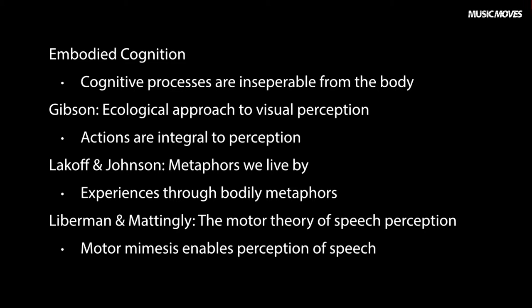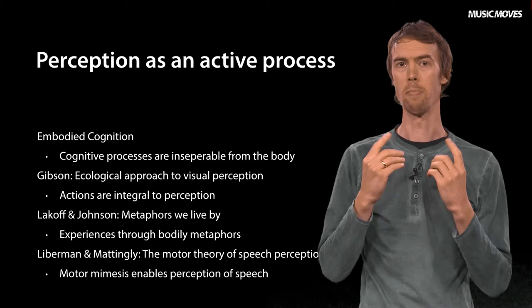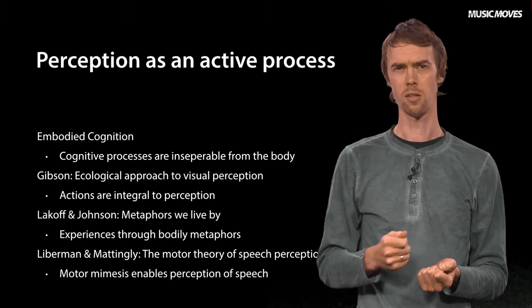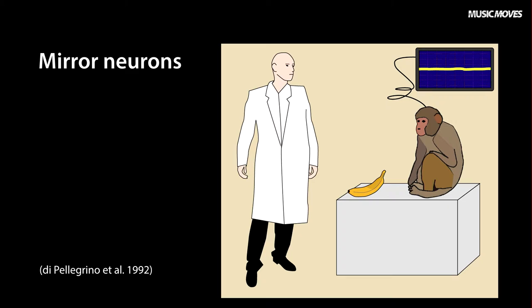Alvin Lieberman and Ignatius Mattingly argued that the way we perceive speech is by means of projecting the perceived sounds onto our own vocal apparatus. In other words, we understand words by mentally mimicking the sound production. This theory was met by harsh criticism and is still being criticized, however it was strengthened by the discovery of mirror neurons in the early 1990s.